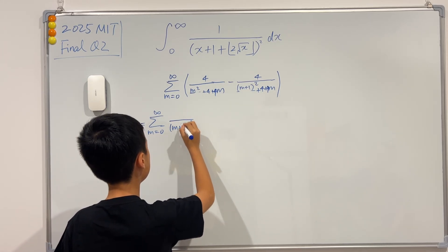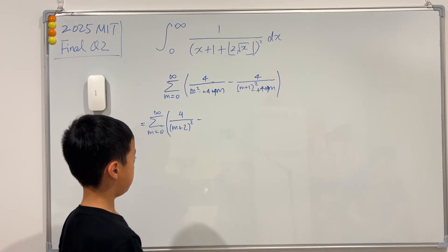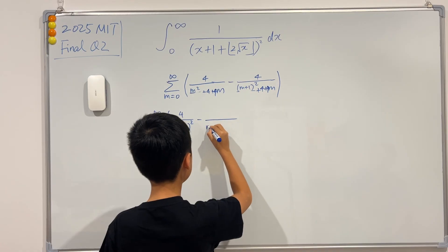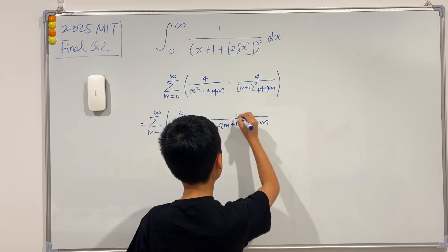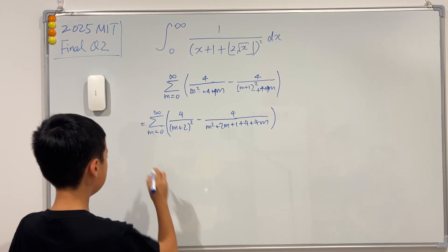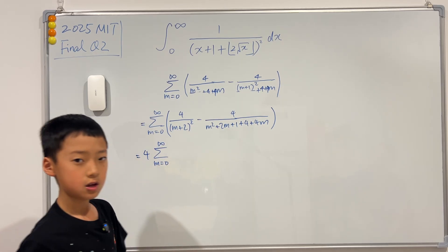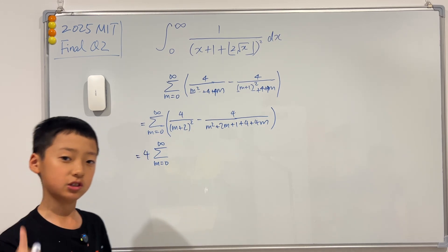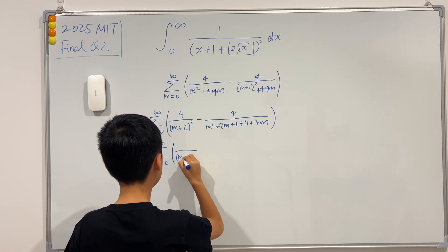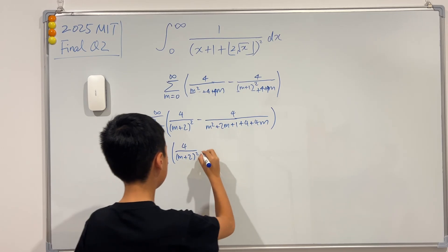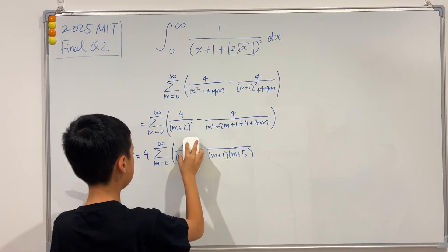We see that m² + 4 — because 4m is part of a perfect square — gives (m+2)². Expanding (m+1)² + 4 gives m² + 2m + 1 + 4, and taking 4 out and simplifying gives m² + 6m + 5. Factoring that, the inside becomes (m+1)(m+5).